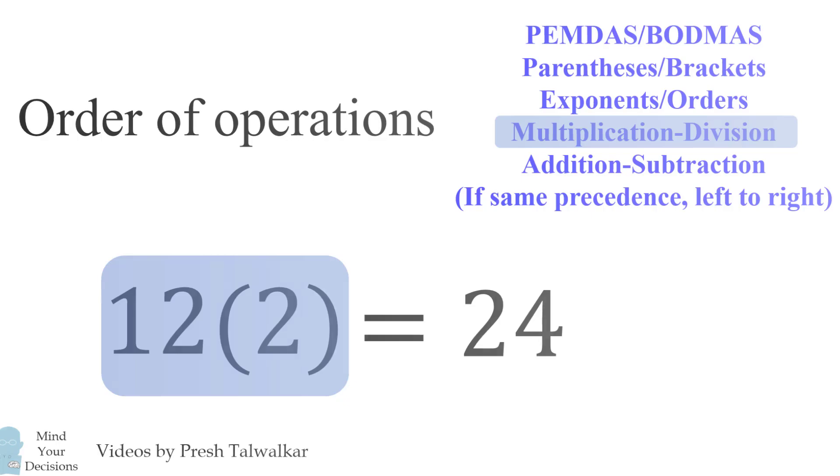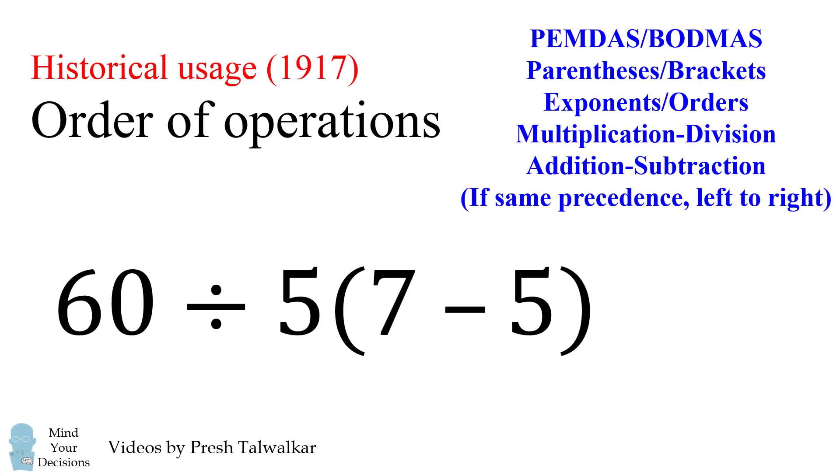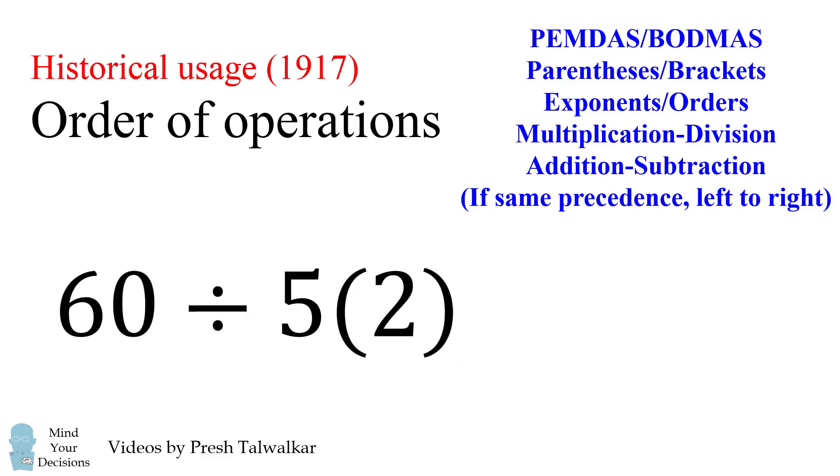But let's time travel for a bit. While historically, this division symbol had a special meaning when you wrote it in text. So let me go over this interpretation. We would still evaluate the parentheses first, 7 minus 5 is equal to 2. The question is what to do next. The special rule about this division symbol is that you would evaluate everything on the left and divide it by everything on the right. So if you have x divided by 2y, that would be equal to x divided by parentheses 2 times y.